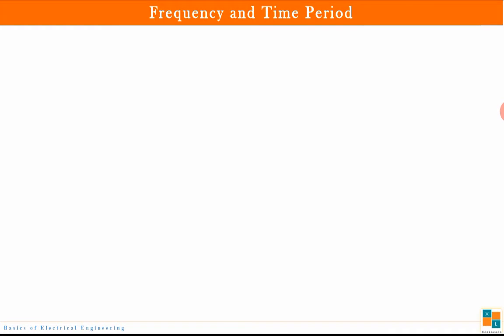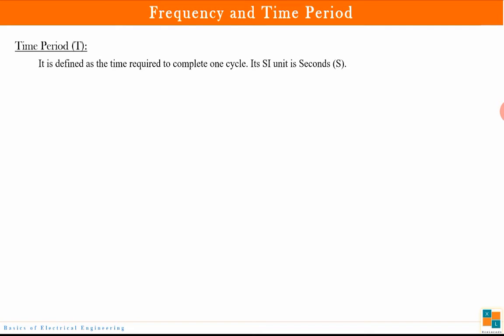Now let us understand what frequency and time period are. You have to remember that DC does not have any frequency — the frequency of DC is zero. So we are talking about the frequency of an AC signal. Time period is defined as the time required to complete one cycle.